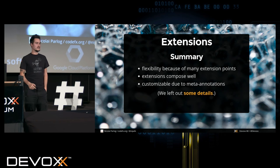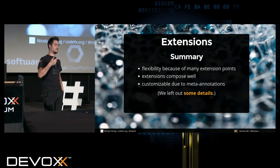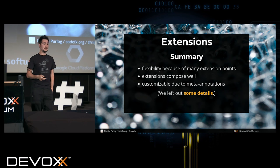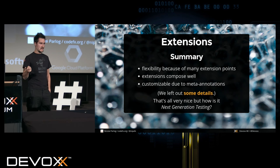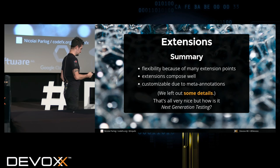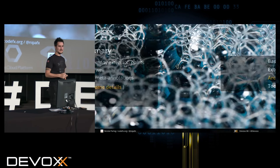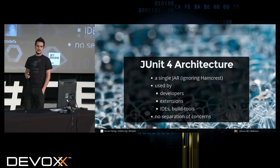Summarizing extensions: we've seen a lot of flexibility because of many extension points that compose well. They're pretty well customizable due to meta-annotations. But we left out some small details you can find behind the link. How is this next-generation testing? It's a nice way to use JUnit 5, but let's go further and look at the architecture.